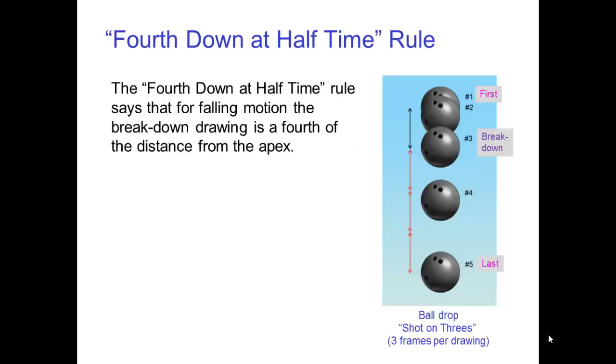Fourth down at half-time is a useful rule for animating falling motion by pose-to-pose action. The rule says that for falling motion, the breakdown drawing is a fourth of the distance from the apex. In this example, key number 3 is the breakdown drawing.